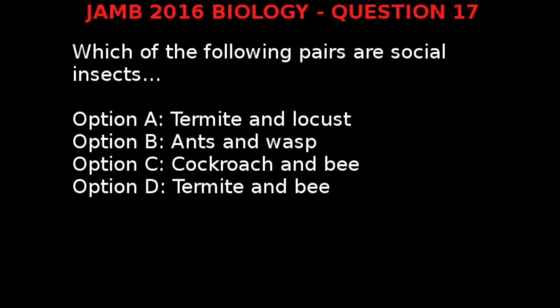JAM 2016 Biology question 17. Which of the following pairs are social insects? Option A, termites and locusts. Option B, ants and wasps.